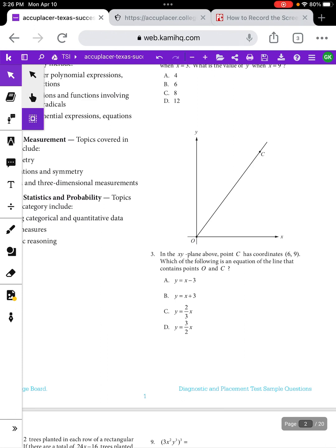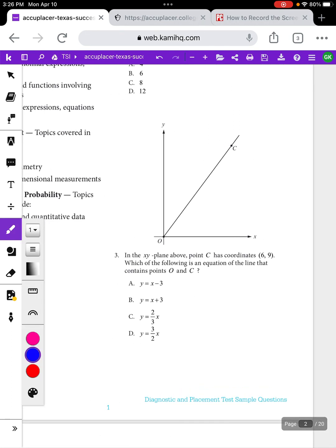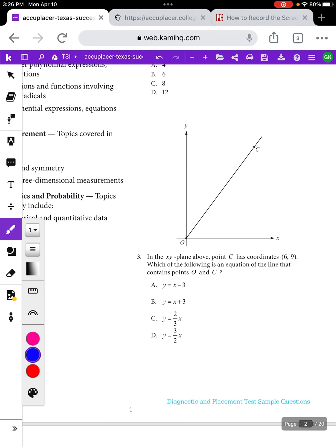The good news is a lot of these questions can be solved by plugging in different answer choices. So let's look at this first one that we have here. It says in the xy plane above, so we have a picture of a graph, point C has coordinates 6, 9, which of the following is an equation of the line that contains points O and C.